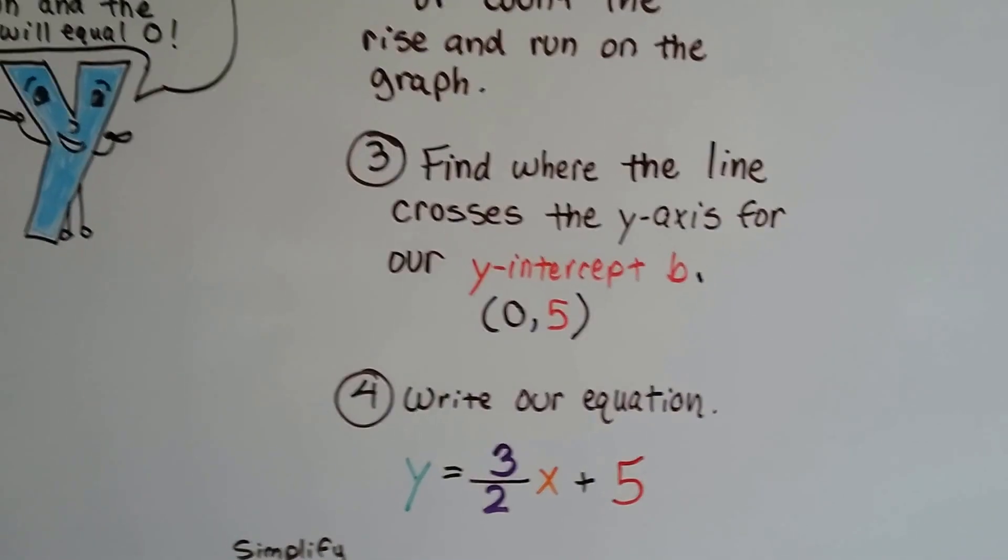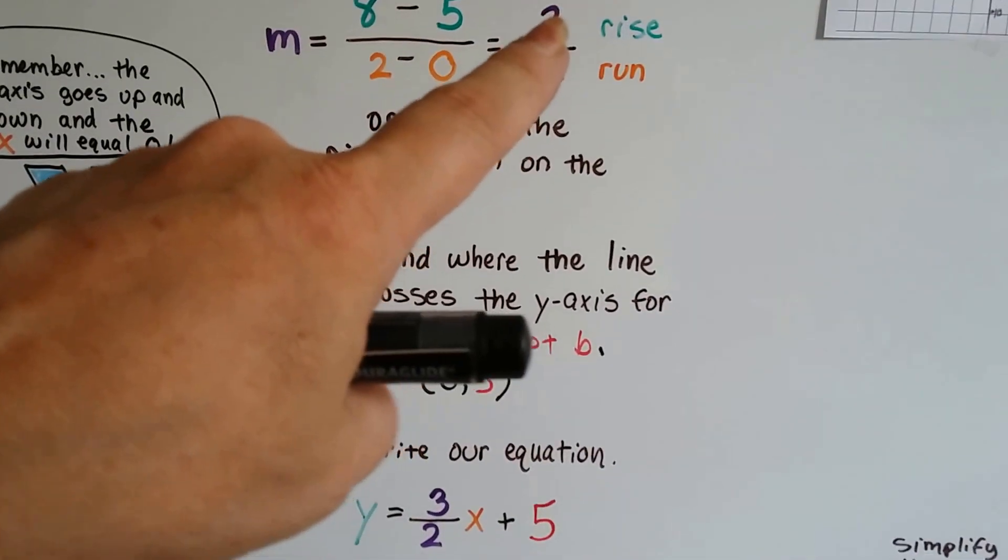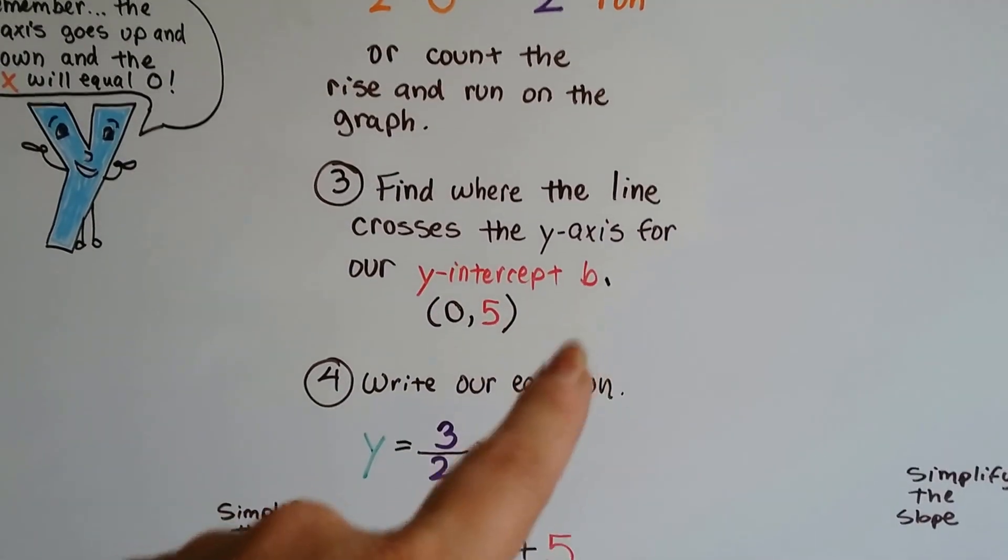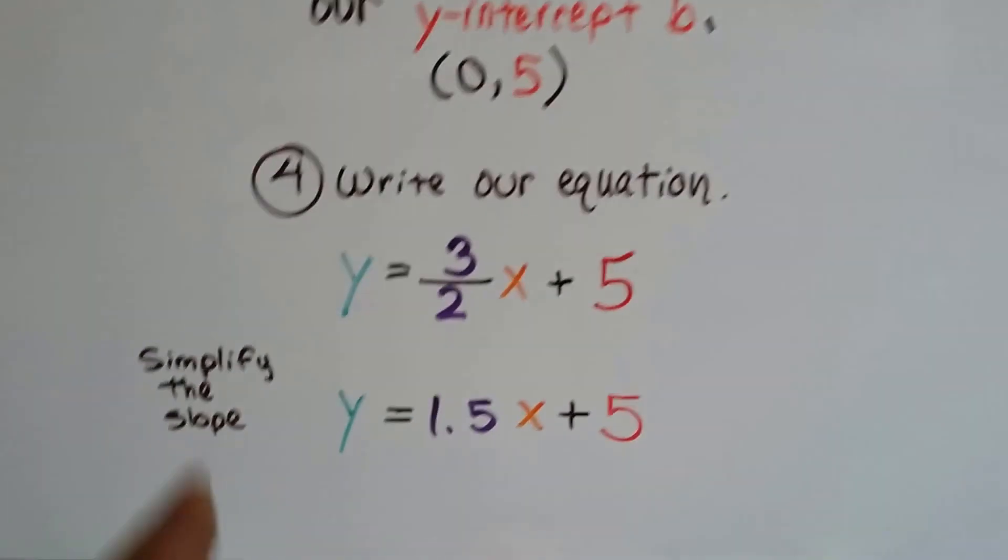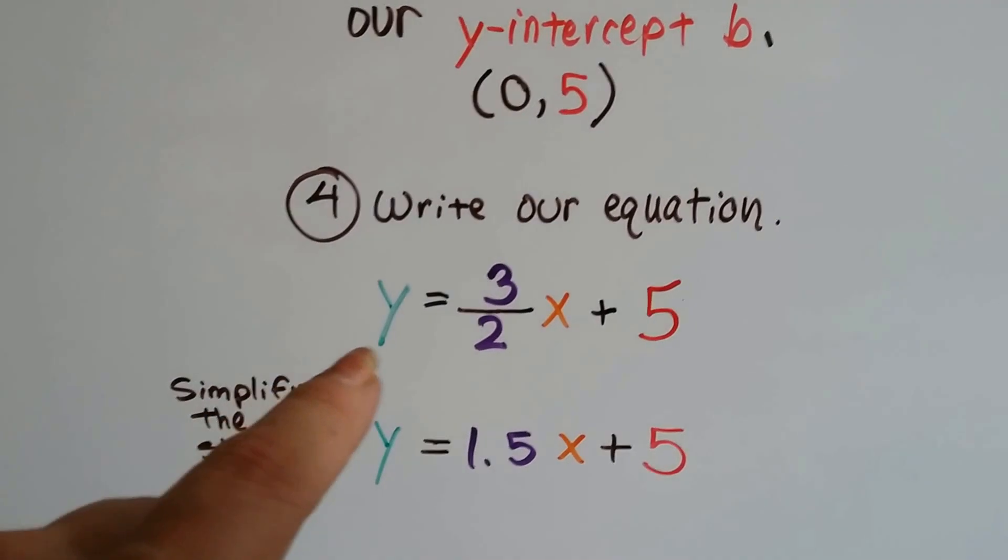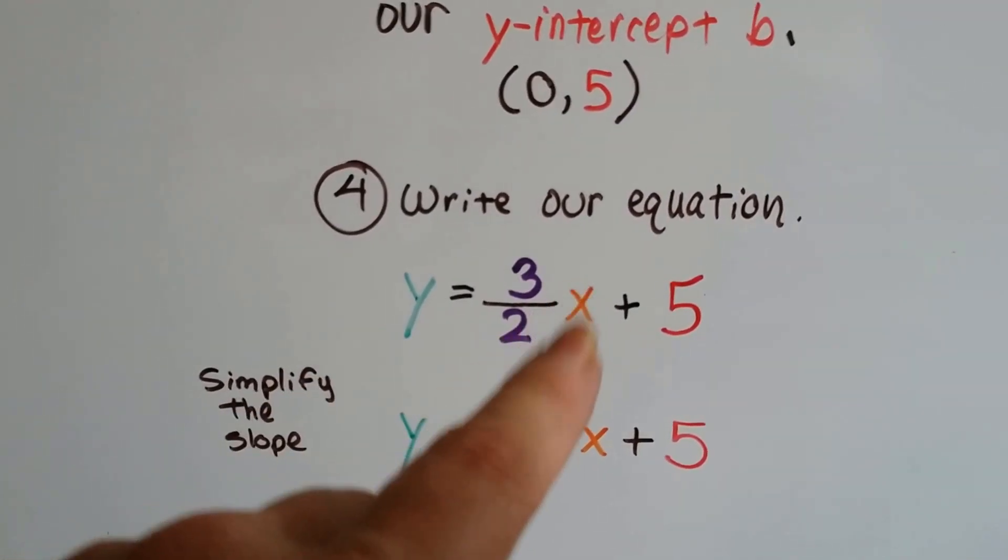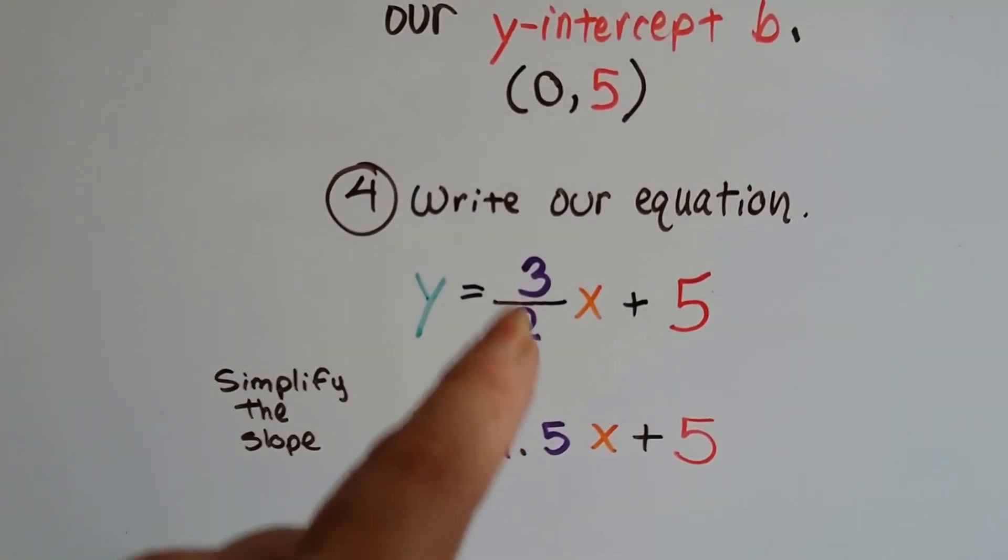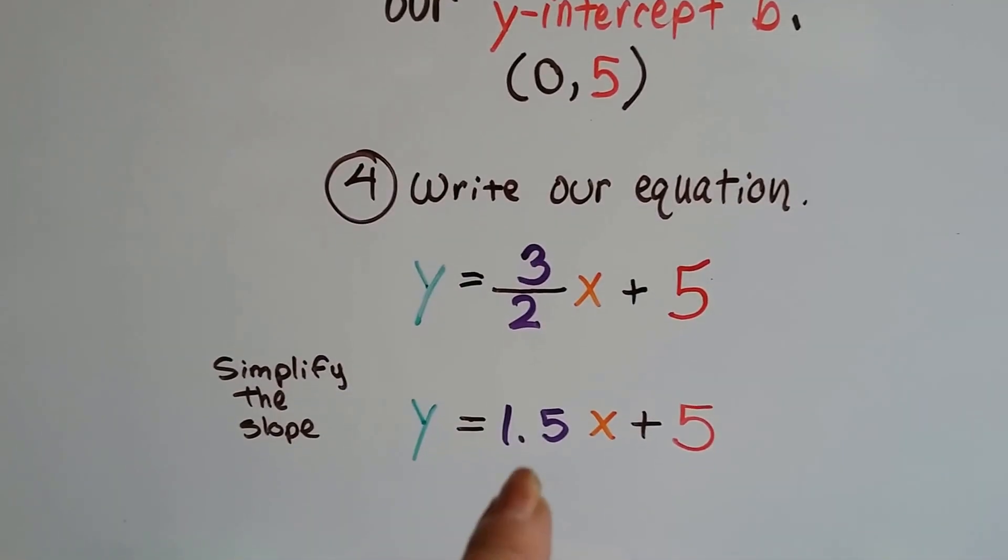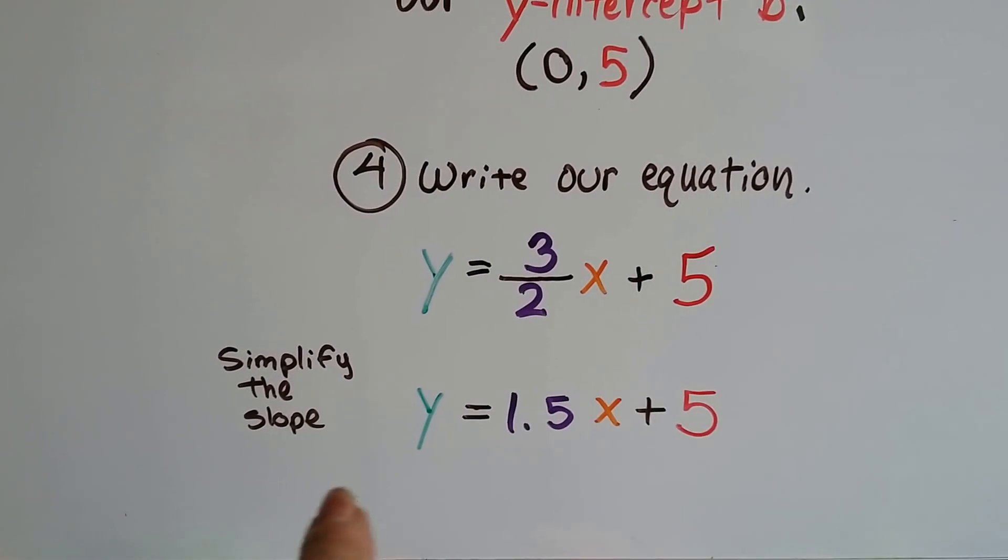The y-intercept b in our equation is going to be a 5. Then we write our equation. We've got all our information. We've got our slope. We've got our y-intercept b. And all we do is fill in the x and the y. And written in slope-intercept form, we've got y equals 3 over 2x plus 5. And we can simplify the 3 over 2 to 1.5. That's 1.5. And that's our equation.